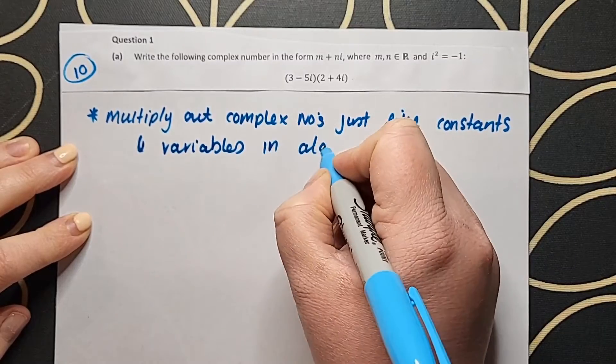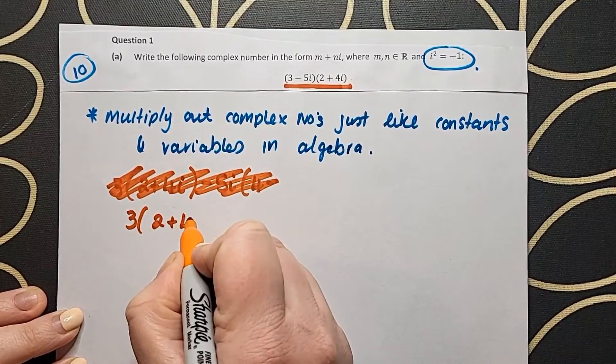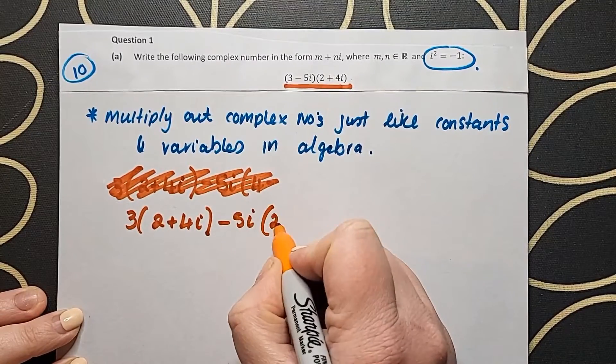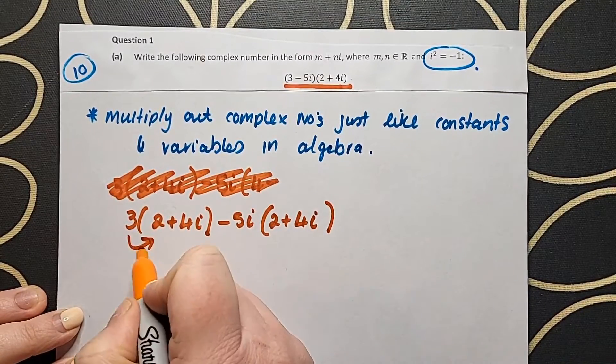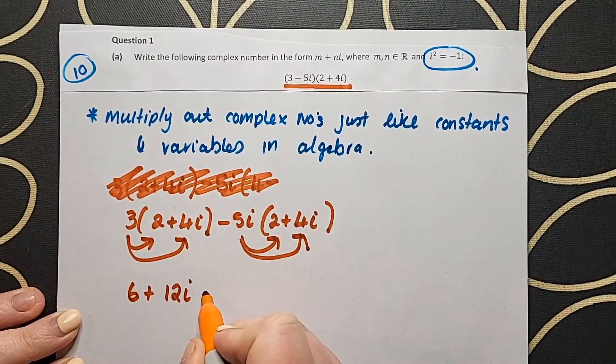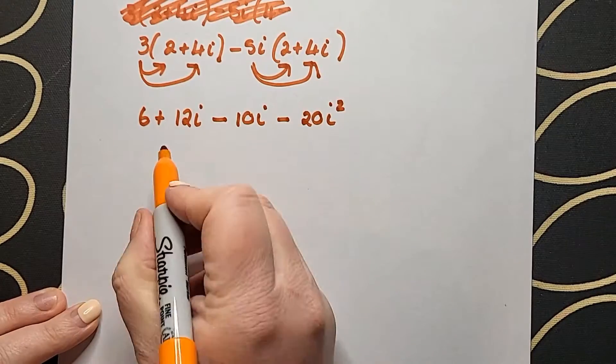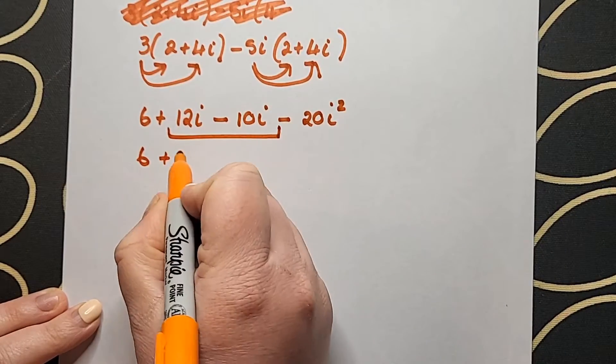When you're multiplying out complex numbers, you're really treating them exactly like constants and variables that you would have used in algebra over the years. I'm going to go straight back to basics and multiply out this by breaking up the first bracket and multiplying it into the second. You can see I have done out my brackets and my arrows there and I'm just multiplying them out bit by bit.